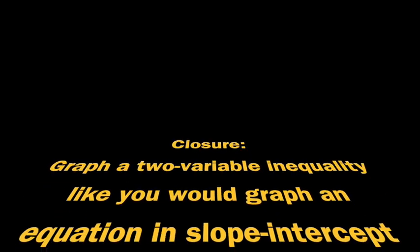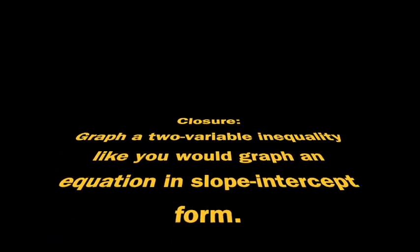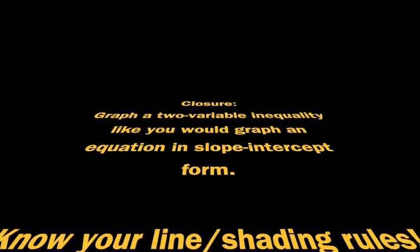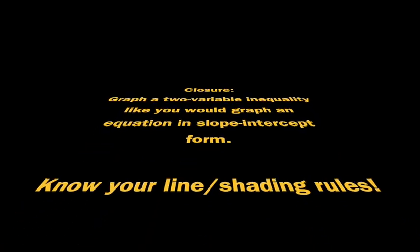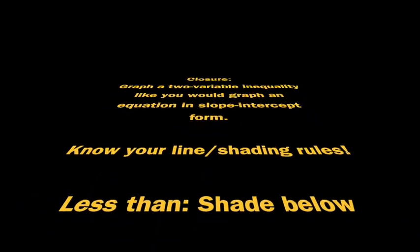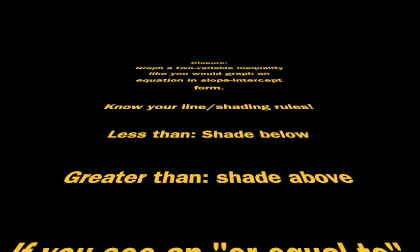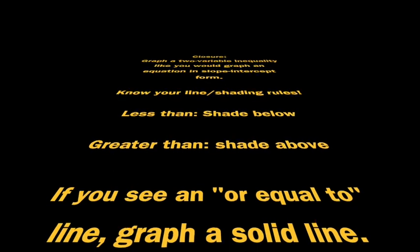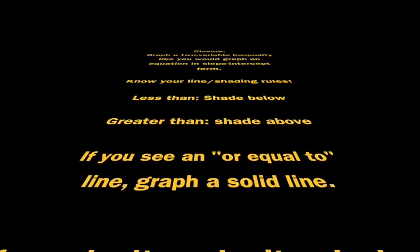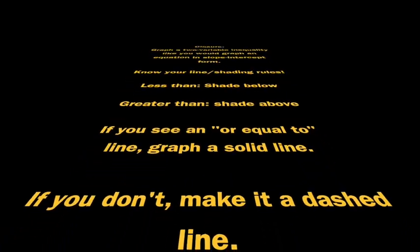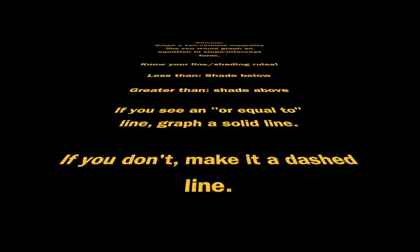So to summarize graphing two variable inequalities, treat them as if they're an equation you're graphing in slope-intercept form. You do need to know the rules about the line and the shading. If it is a less than problem, you're going to shade below the line. If it's a greater than problem, you're going to shade above the line. If you see an or equal to line, then you make it a solid line. But if you don't, you make it a dashed line. If you came away with anything else, write that down now. Otherwise, we'll see you in the next lesson.